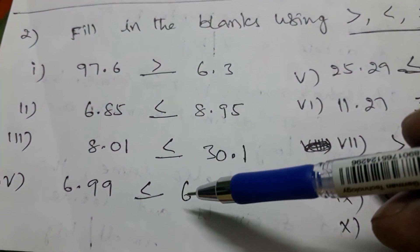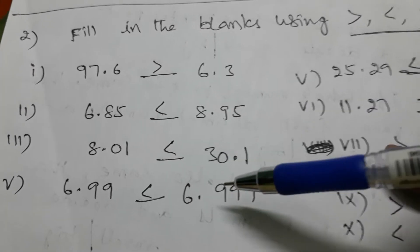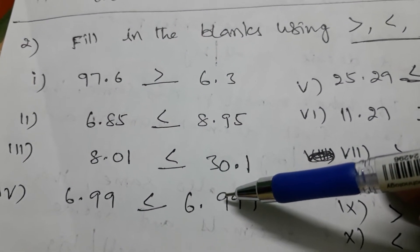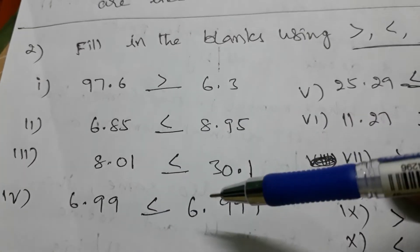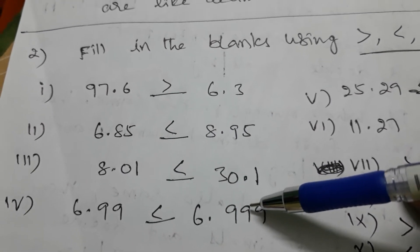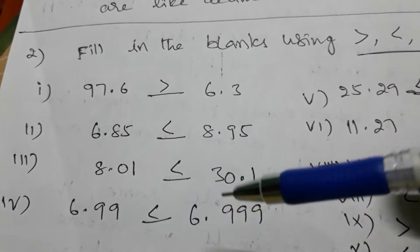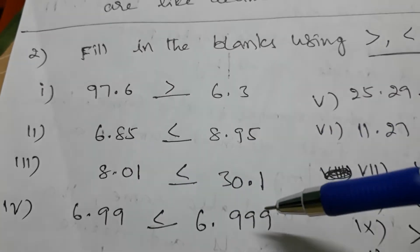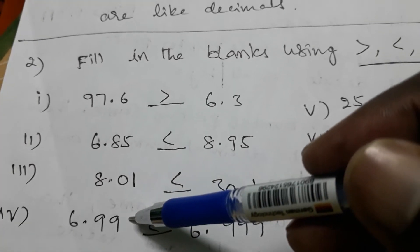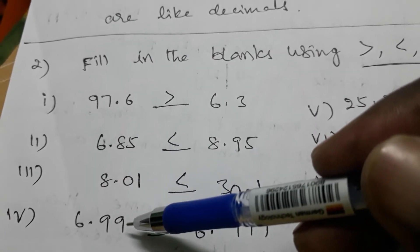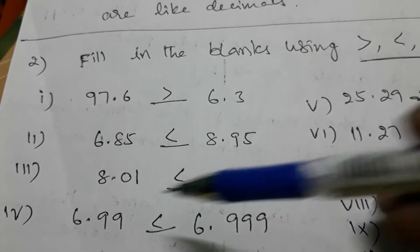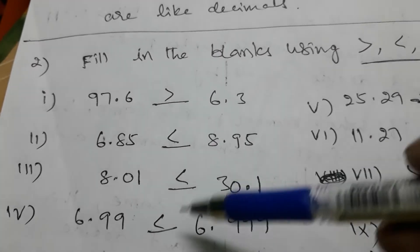When the whole number part is equal, we cannot decide which is greatest or smallest. So check the first decimal: first decimal is 9 and 9 — still cannot decide. When whole number part is same and first decimal is also same, go to the second decimal — second decimal is also same. Then go to the third decimal: it's not there in one number, which means it is zero. So we have 0 and 9 — nine is greater than zero, so 6.999 is the greatest.